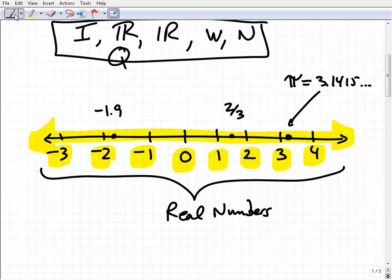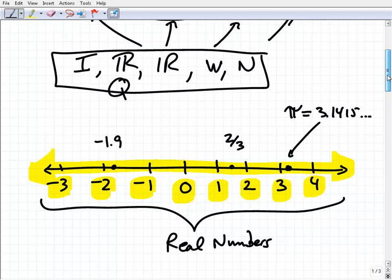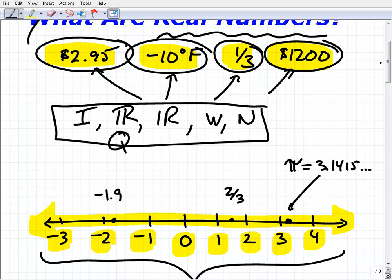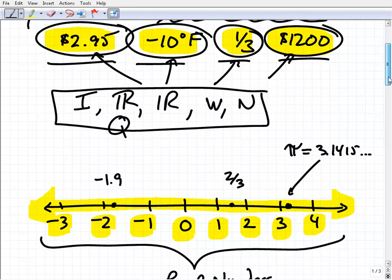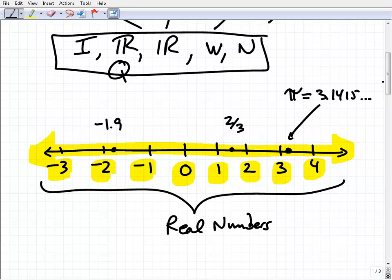All right, so this is a quick video on real numbers. So what are real numbers? Real numbers are those numbers that we encounter in everyday life. That's a good way to think about them. But they're made up of a subset of numbers that we find on the real number line.